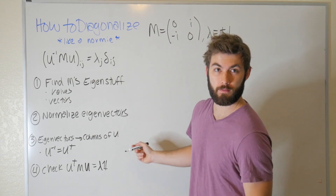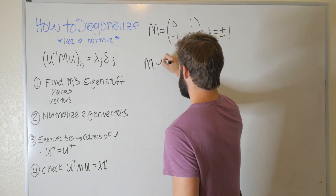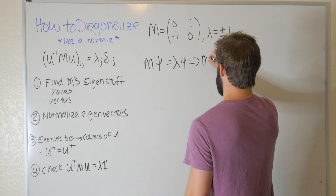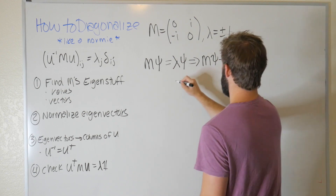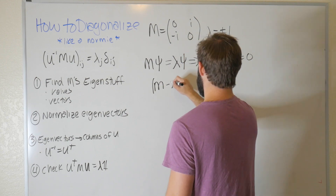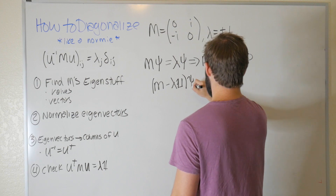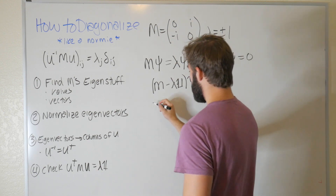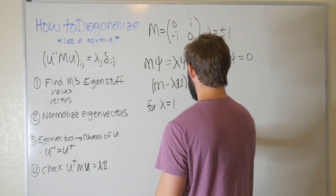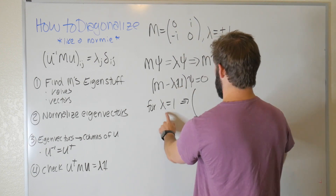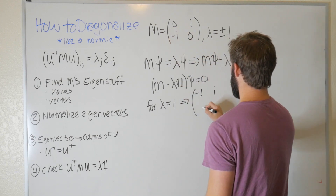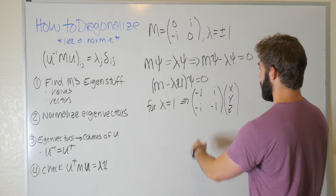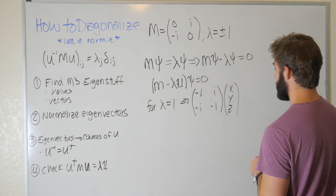Next step: find our eigenvectors. We write down the eigenvalue equation M ψ = λ ψ, subtract to get (M − λI)ψ = 0, and build the matrix representation for each eigenvalue. For λ = 1, this becomes [[0−1, i],[−i, 0−1]] ψ = [[−1, i],[−i, −1]] [x, y]ᵀ = 0, which is what we want to solve for the eigenvector.